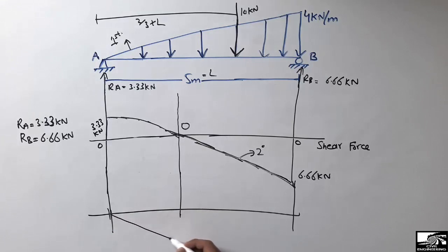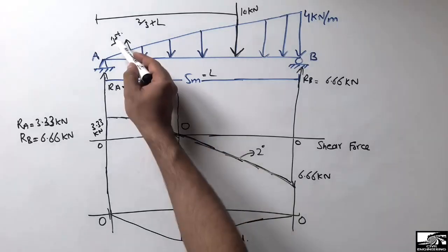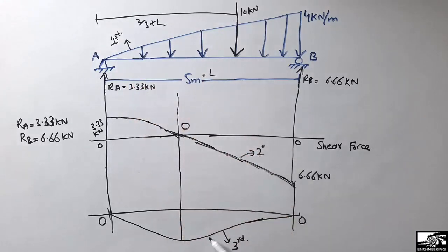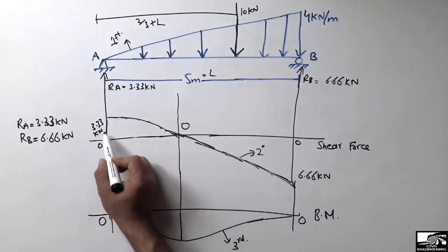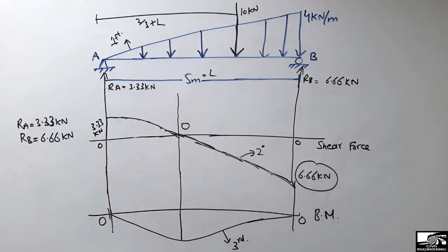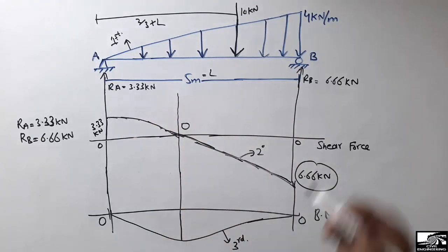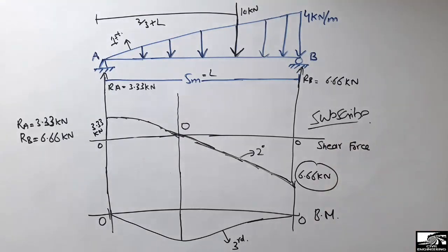Similarly, the bending moment diagram will be a third-degree line, because the load is first-degree, shear force is second-degree, and the bending moment diagram is third-degree. It is zero at both supports and maximum at the point of zero shear. This is a qualitative bending moment diagram — I haven't calculated the exact maximum value. I hope you understand how to deal with a triangular load on a simply supported beam. Don't forget to subscribe for daily Seven Engineering videos — thank you for watching!